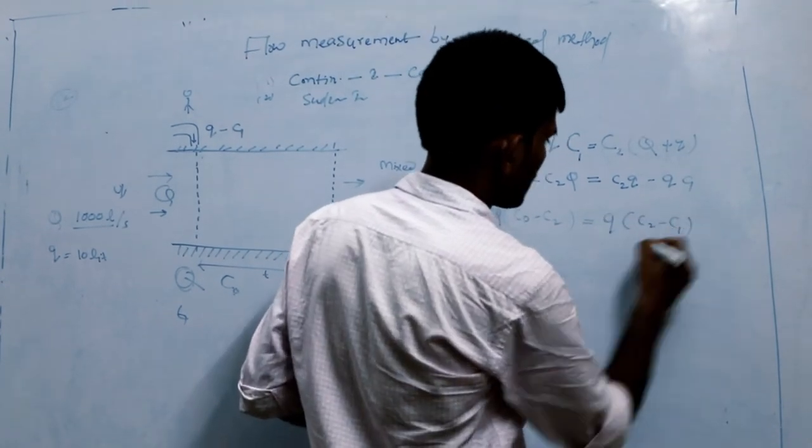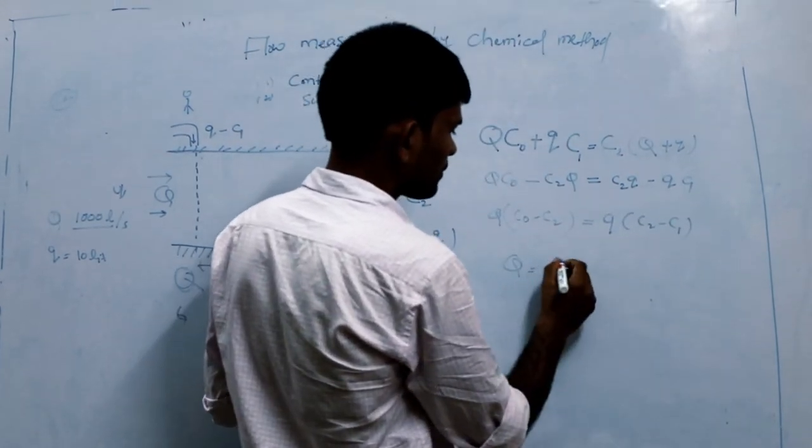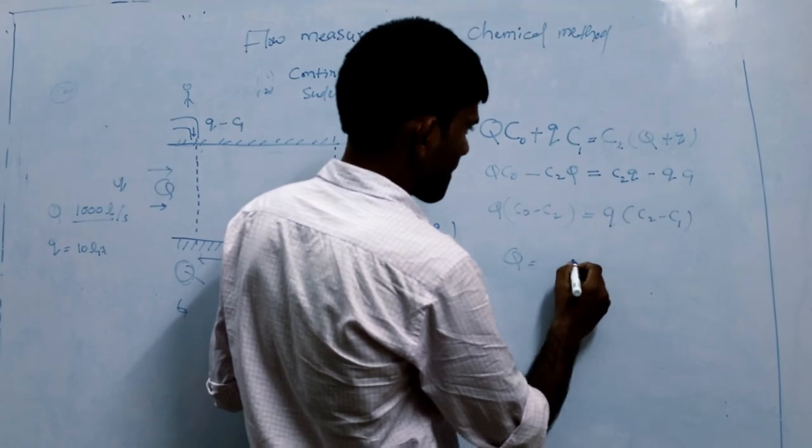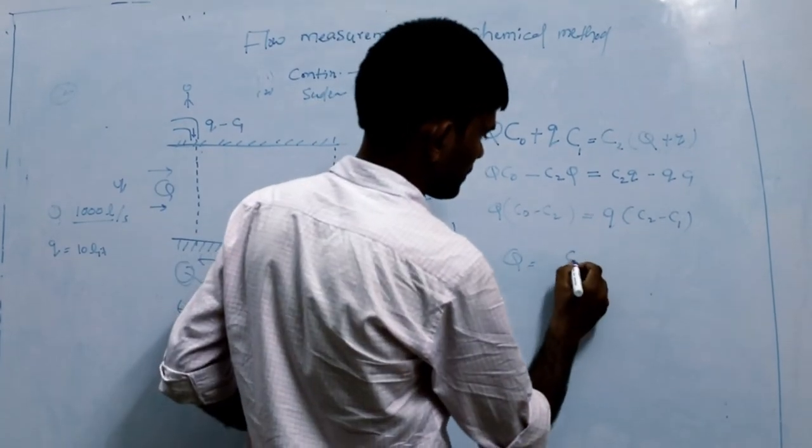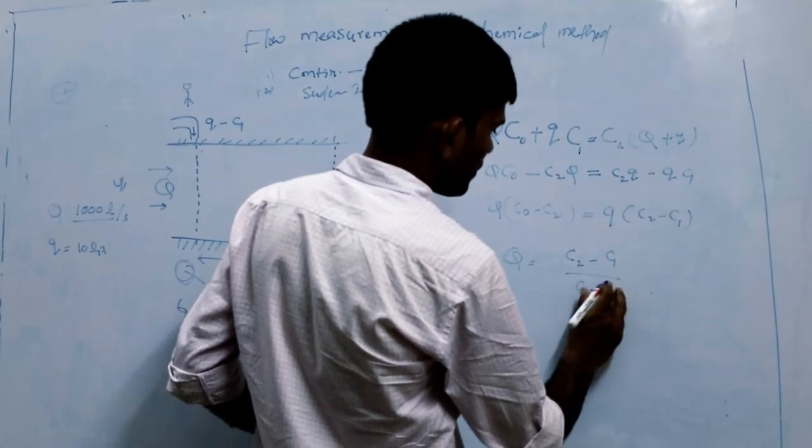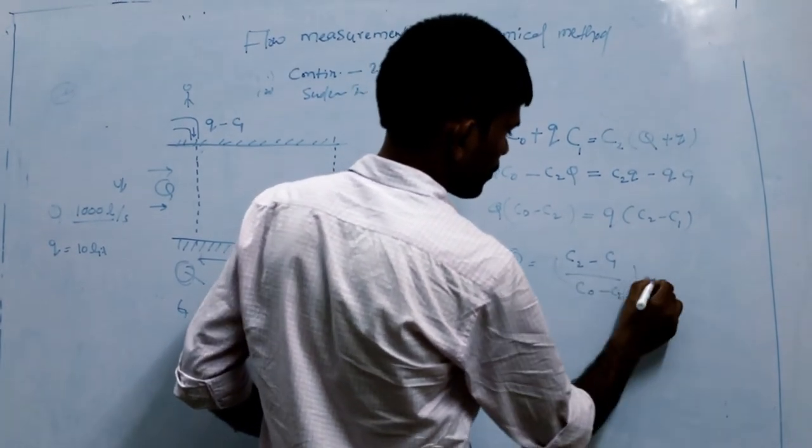C2 minus C1. Now, Q equals (C2 minus C1) divided by (C naught minus C2) times q.